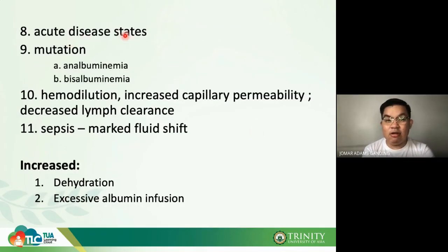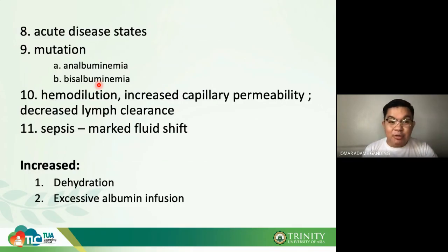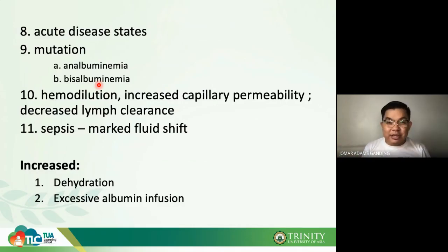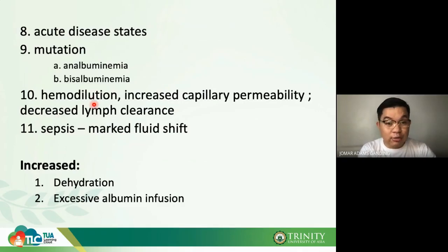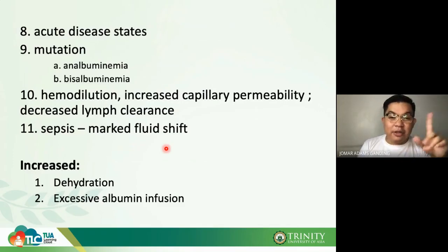Albumin also decreases in acute disease states like inflammation. Genetic conditions affecting albumin include analbuminemia — complete absence of albumin — and bisalbuminemia, which shows an extra band in the electrophoretic pattern.